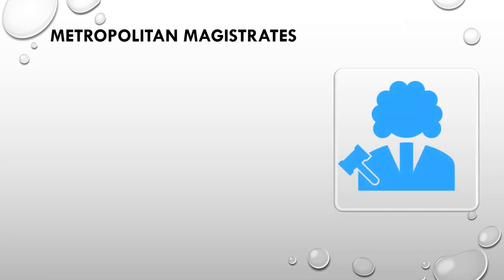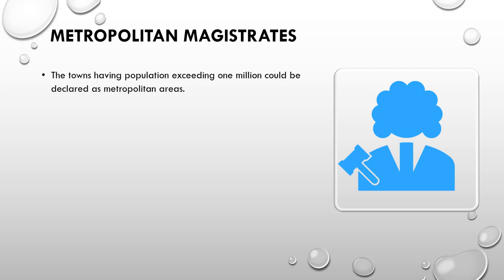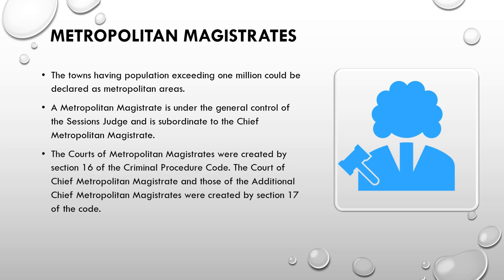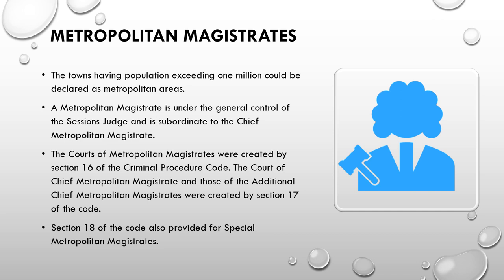The next is the Metropolitan Magistrate. Towns having a population exceeding one million can be declared as metropolitan areas — for example, Delhi is a metropolitan area. A Metropolitan Magistrate is under the general control of the session judge and is subordinate to the Chief Metropolitan Magistrate. The court of Metropolitan Magistrates was created by Section 16 of the CrPC, and the court of Chief Metropolitan Magistrate and Additional Chief Metropolitan Magistrates were created by Section 17. Section 18 also provides for Special Metropolitan Magistrate.